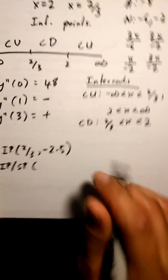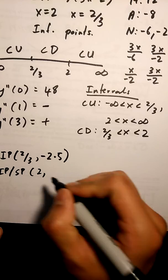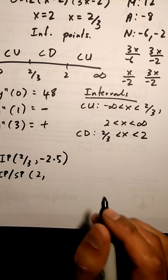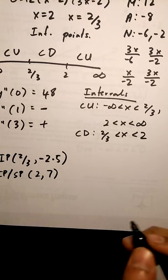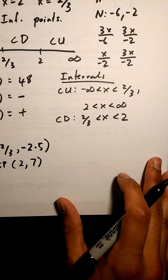And then I have an inflection point and stationary point at 2 comma 7. Okay, finally I can sketch this out.